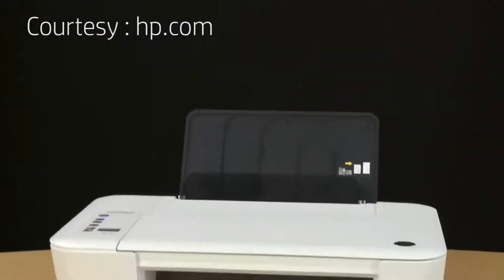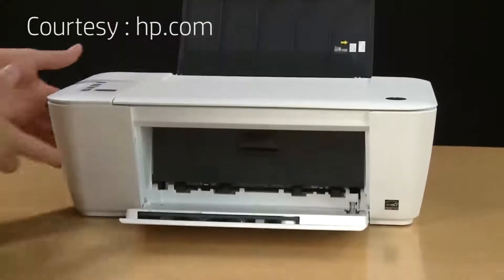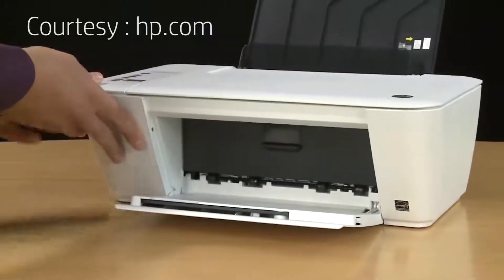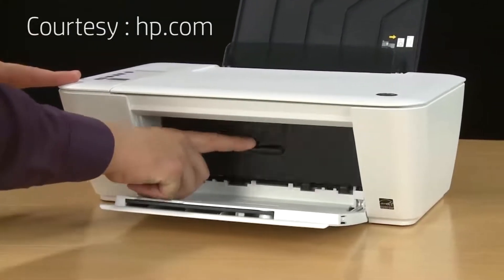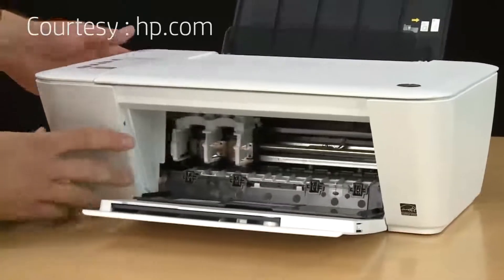After the printer stops making noises, you can locate the cartridges that came with your printer. Use the tab on the front of the ink access door to lower it and the carriage will move into the middle of the printer.